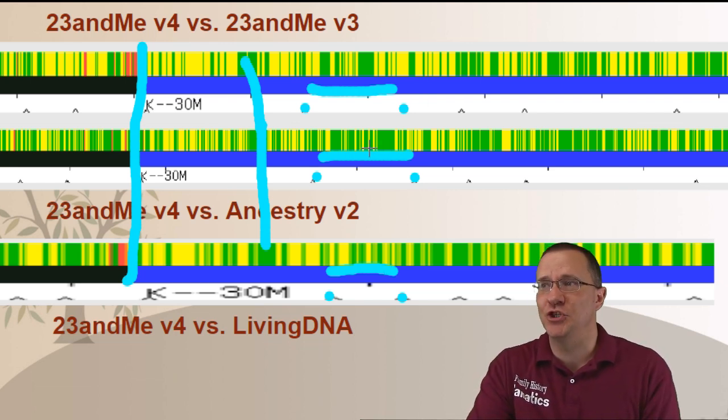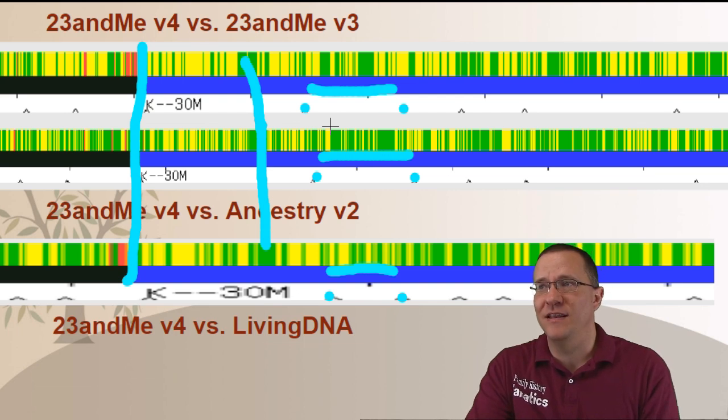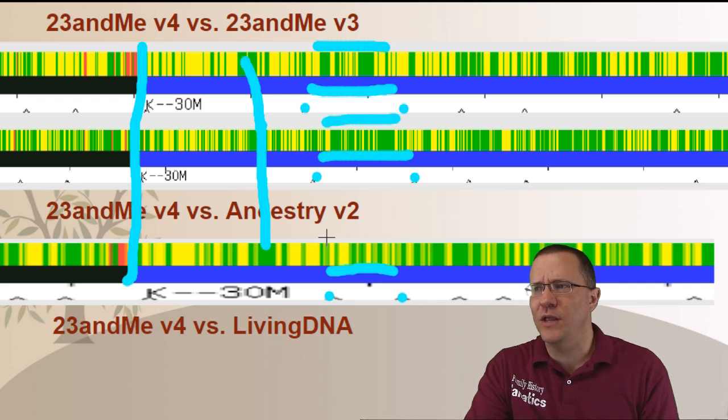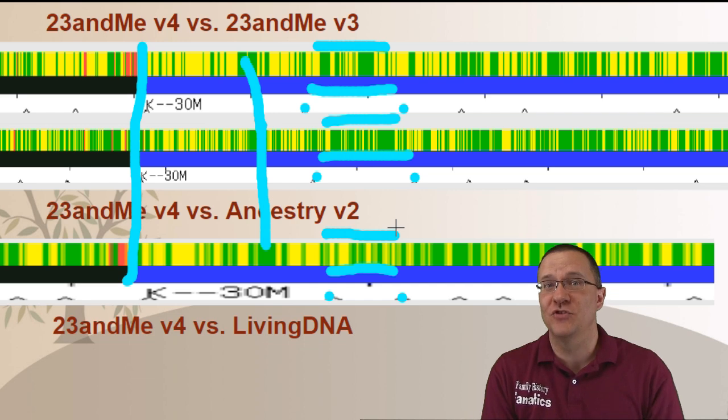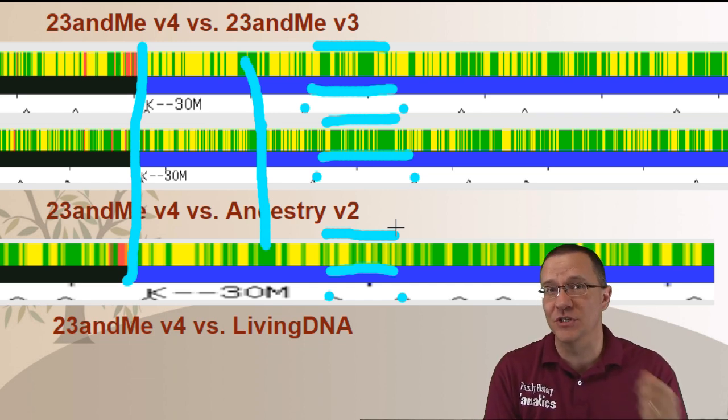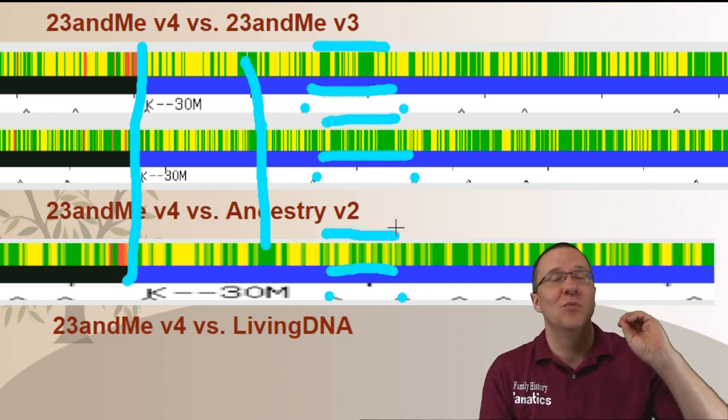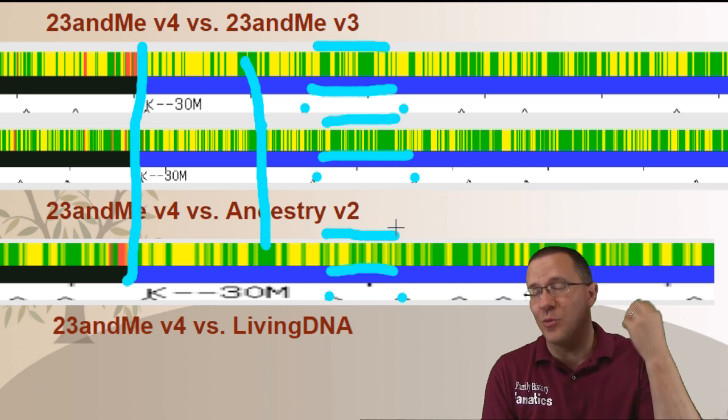And one thing that I can show is that on this second one there's almost all of it is green and even on the first one a sizable amount of this is green between these areas. Whereas when I look down on the LivingDNA one you'll notice it's really only about half and half between green and yellow. So there's a lot of those similar SNPs that were not tested on LivingDNA but were tested on the others.